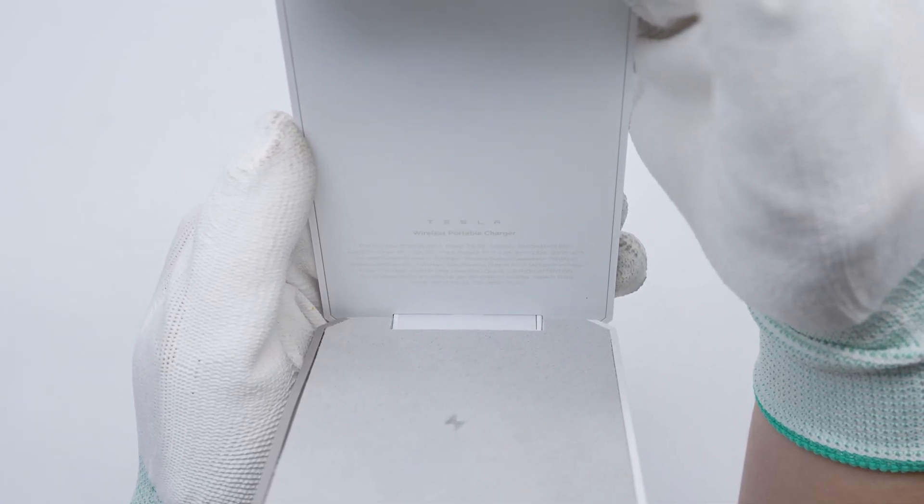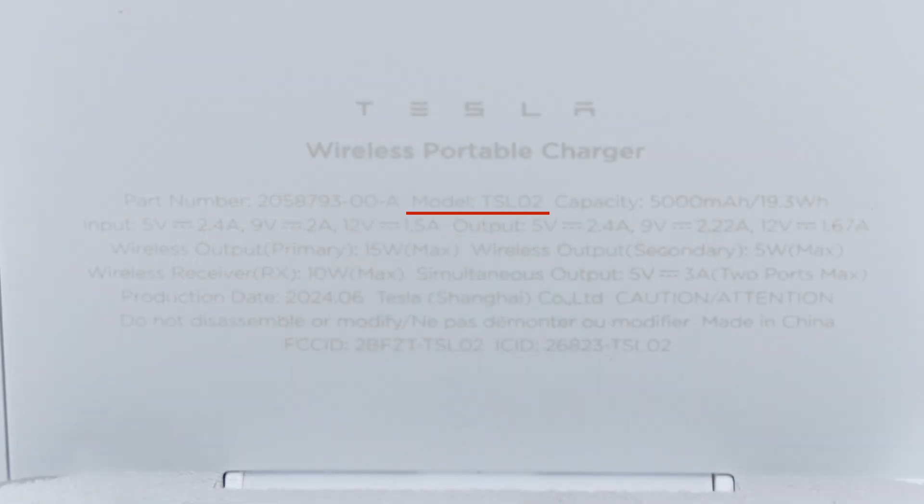The specs info is printed inside. Model is TSL02. The capacity is 5000 mAh, and the energy is 19.3 Wh. It can support input of 5V 2.4 Amps, 9V 2 Amps, and 12V 1.5 Amps. The maximum output is 20 Watts.